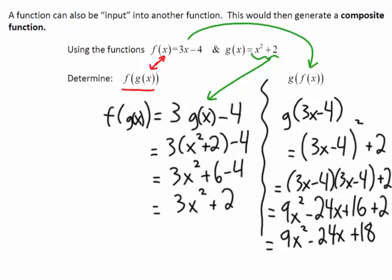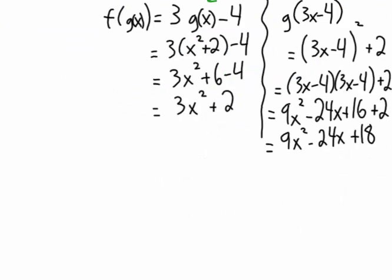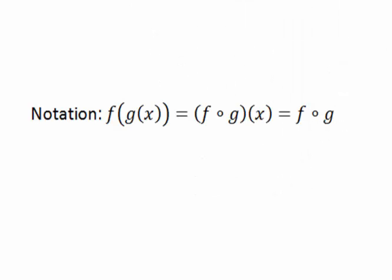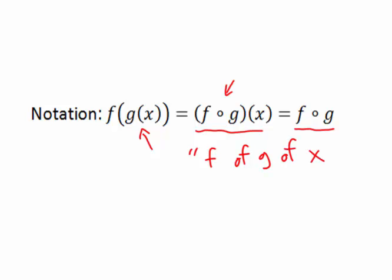We get g of f of x equals 9x squared minus 24x plus 18. An important thing to notice: f of g of x is not equal to g of f of x. It is very important that we put the right function in. This composite notation uses a circle symbol — f circle g of x, sometimes written as f circle g — and we read this as f of g of x.